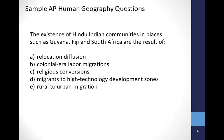These same kinds of strategies, using spatial thinking skills, practices, and habits of mind, can be used to underlie the content that PhD students encounter. For example, here's a sample question from a test several years ago: The existence of Hindu Indian communities in places such as Guiana, Fiji, and South Africa are the result of — A) relocation diffusion, B) colonial era labor migrations, C) religious conversions, D) migrants to high technology development zones, or E) rural to urban migration. The answer is B — colonial era labor migrations.